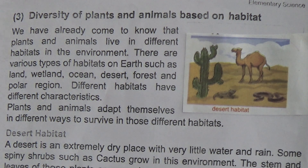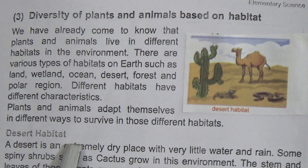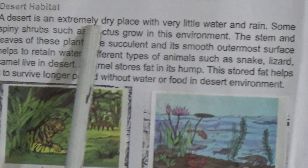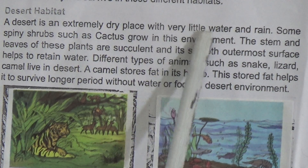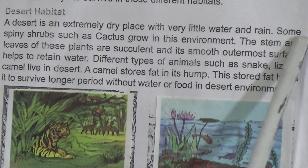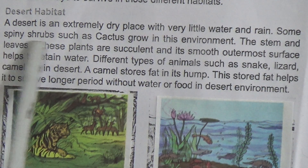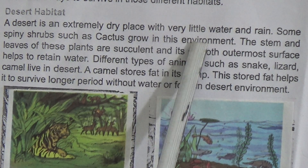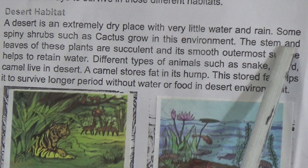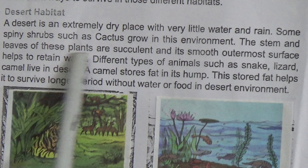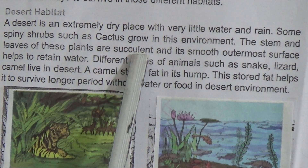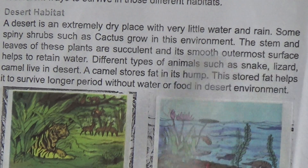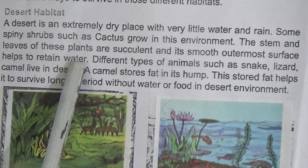Here is the desert habitat. A desert is an extremely dry place with very little water and rain. Some spiny shrubs such as cactus grow in this environment. The stems and leaves of these plants are succulent, and their smooth outermost surface helps to retain water.